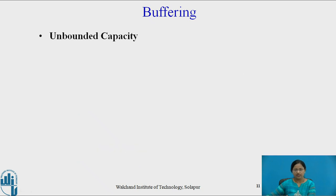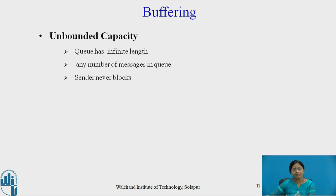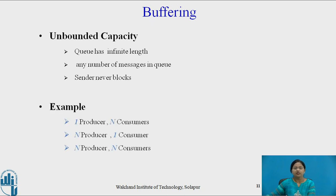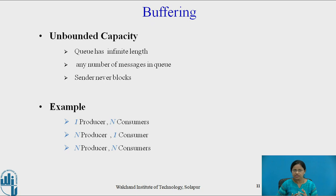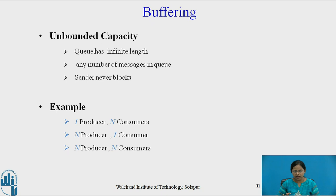The third type is unbounded capacity: the queue has infinite length, any number of messages may reside in the queue, and the sender never blocks. Examples include one producer with n consumers, n producers with one consumer, or n producers with n consumers. Zero capacity is also called no buffering, while bounded capacity and unbounded capacity are called automatic buffering.